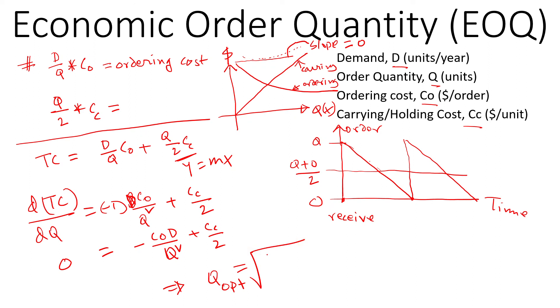If we solve for Q, that will be the optimum order quantity that will minimize the cost. So this is the basic Economic Order Quantity. In the next video, I'll show you how to use this formula and solve a problem.